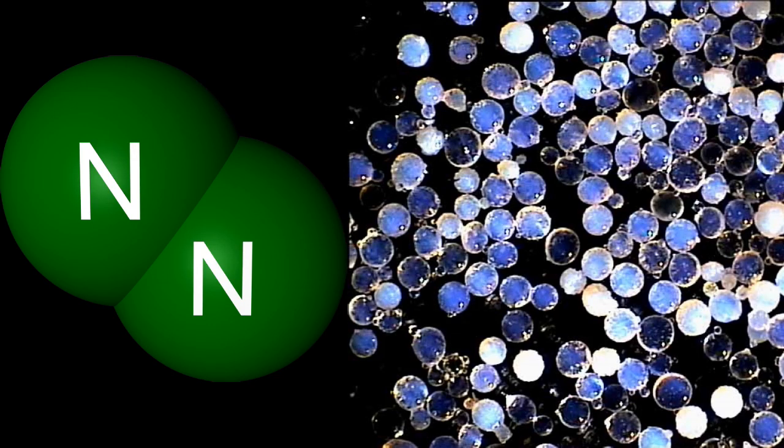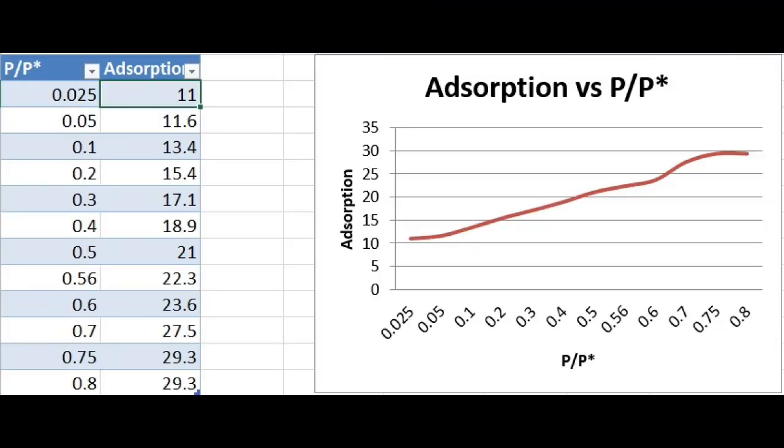Whereas, the adsorption of nitrogen gas on mesoporous surfaces such as porous glass at 73 Kelvin produces an isotherm that looks like this.